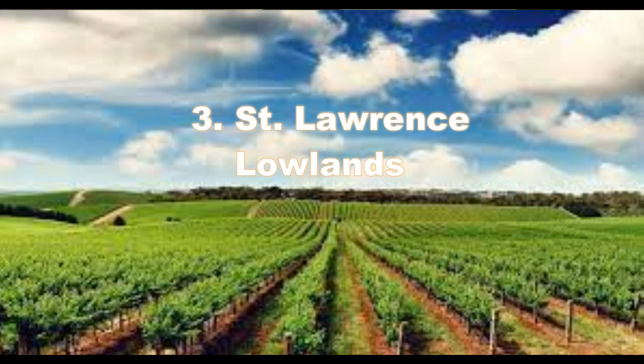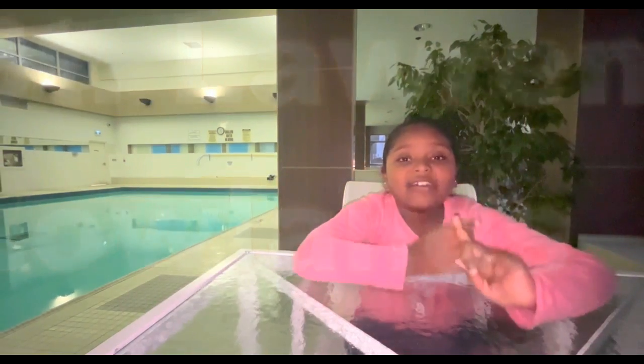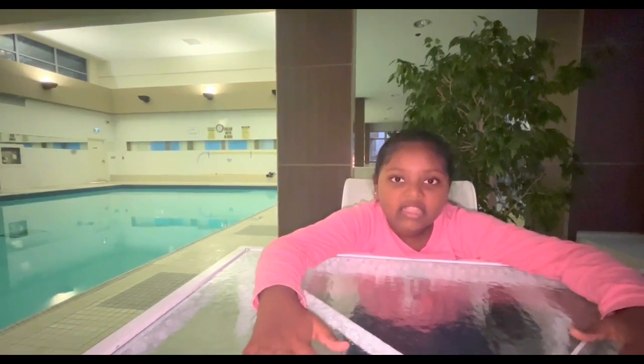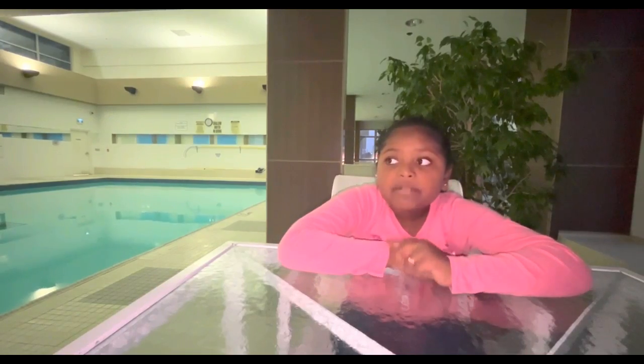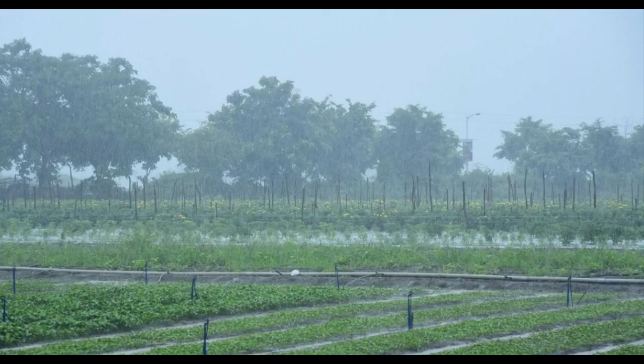The third landform region is St. Lawrence Lowlands. It is the second largest farming area, because of its rich soil, flat land, and long-lasting season. Sometimes there are a lot of people, so what people do is put chemicals to kill the weeds to help the plants. But how does pollution happen?